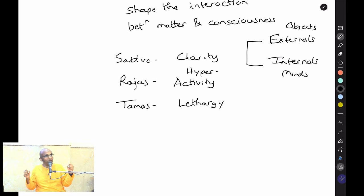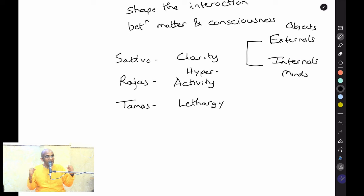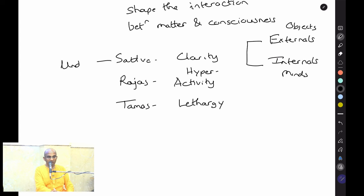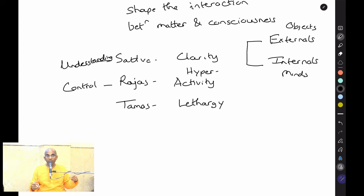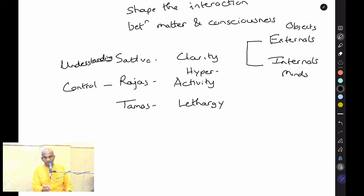In Rajo Guna: 'Things are happening, I have to make them happen my way, I have to bend the world to my will.' So broadly, Sattva seeks understanding — clarity is associated with understanding. Rajas seeks control. When we are in Rajo Guna, our primary goal is to control things. And Tamas seeks escapism.